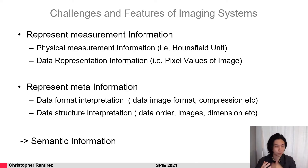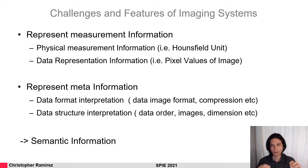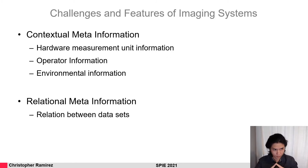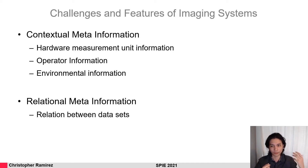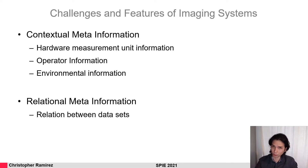We also need some kind of structural information: the data order, the image dimensionality. All this information is called semantic information and is at least the minimal amount of information that we need to reconstruct our data into a volume. Additional features used mostly in clinical settings include some kind of contextual meta information. This information we are mostly interested in for verifiability purposes, maybe for some environmental information, or information about the operator of the measurement — the person that actually made the measurement — and maybe some calibration data about the hardware.